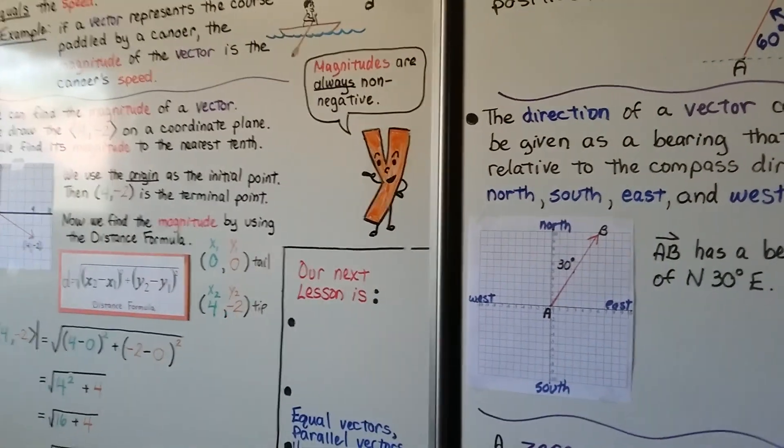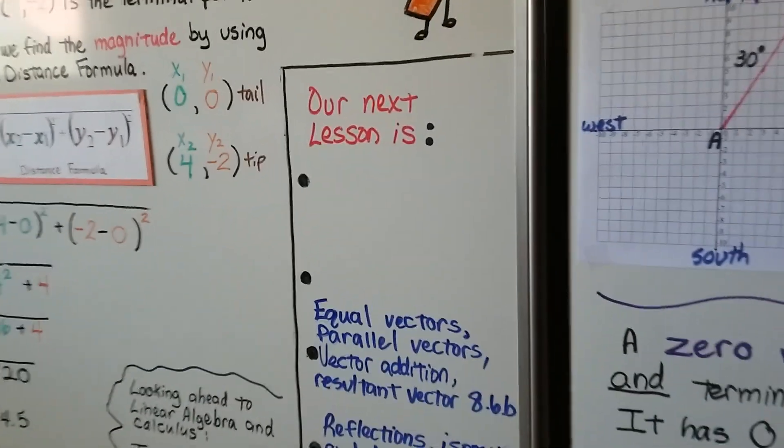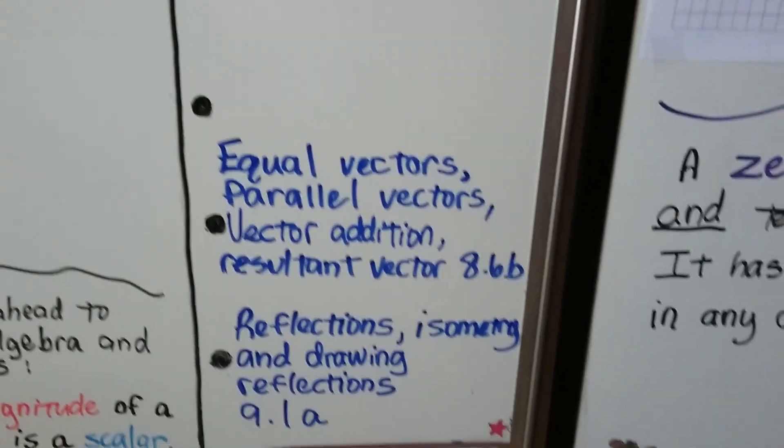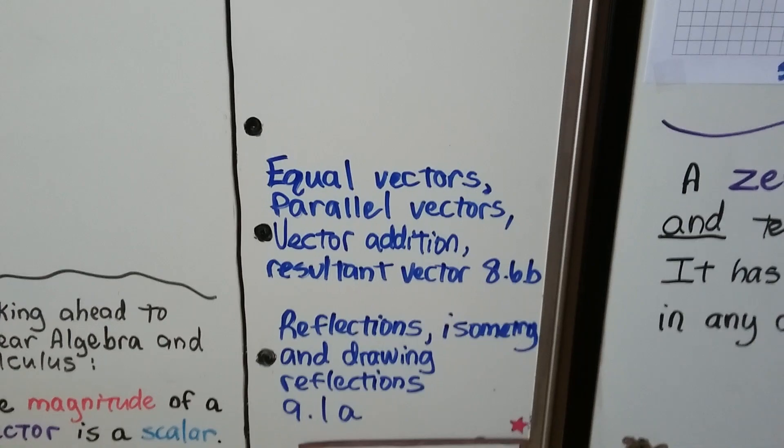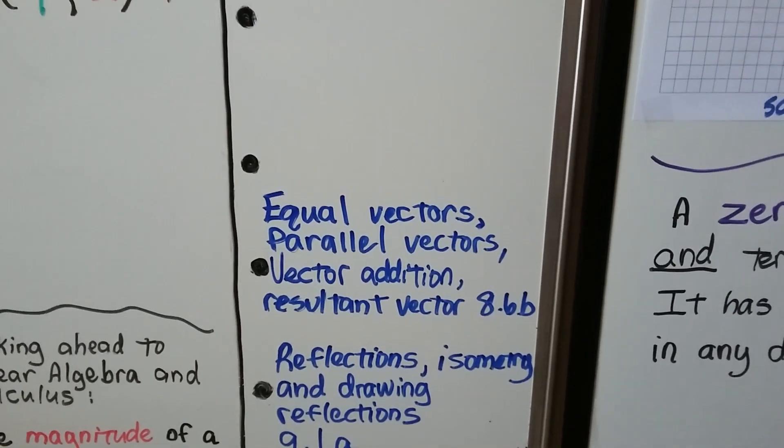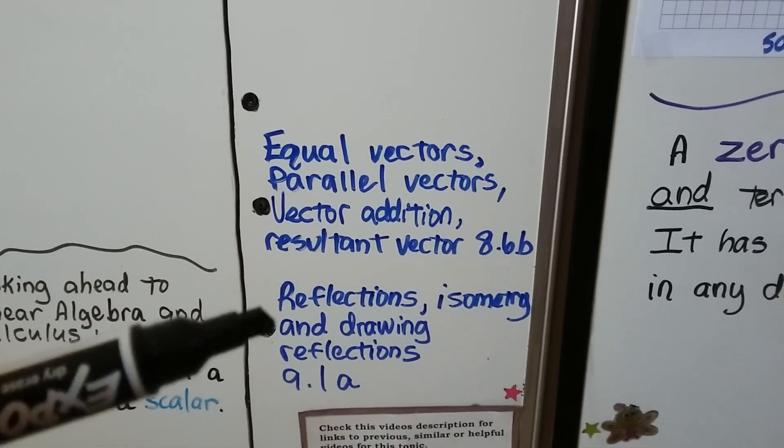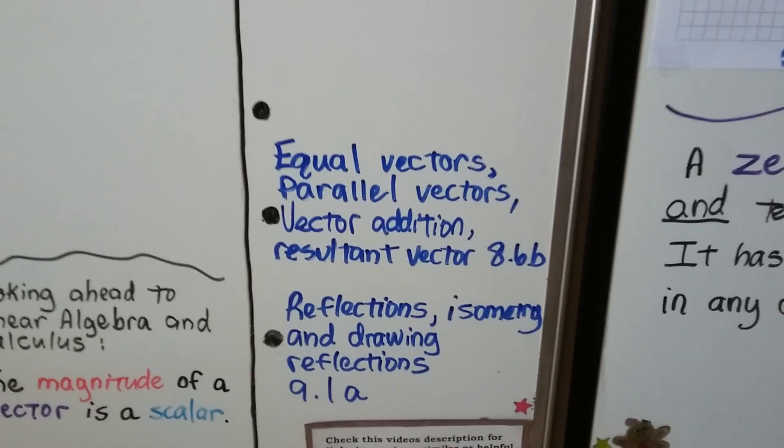So, remember, magnitudes are always non-negative. And our next lesson, we're going to learn about equal vectors, parallel vectors, vector addition, and resultant vector in 8.6b, before we move on to chapter 9 and get back into transformations.